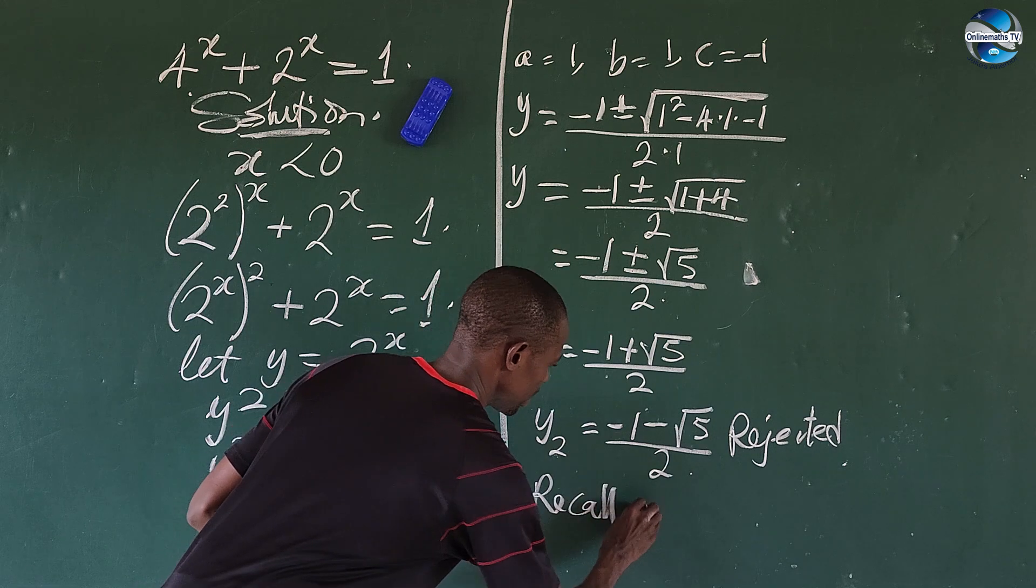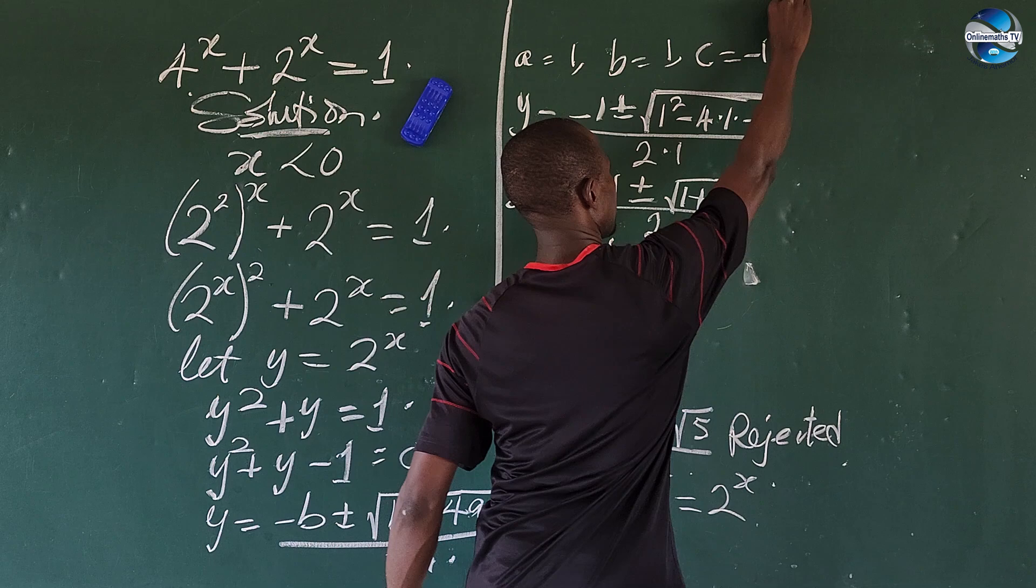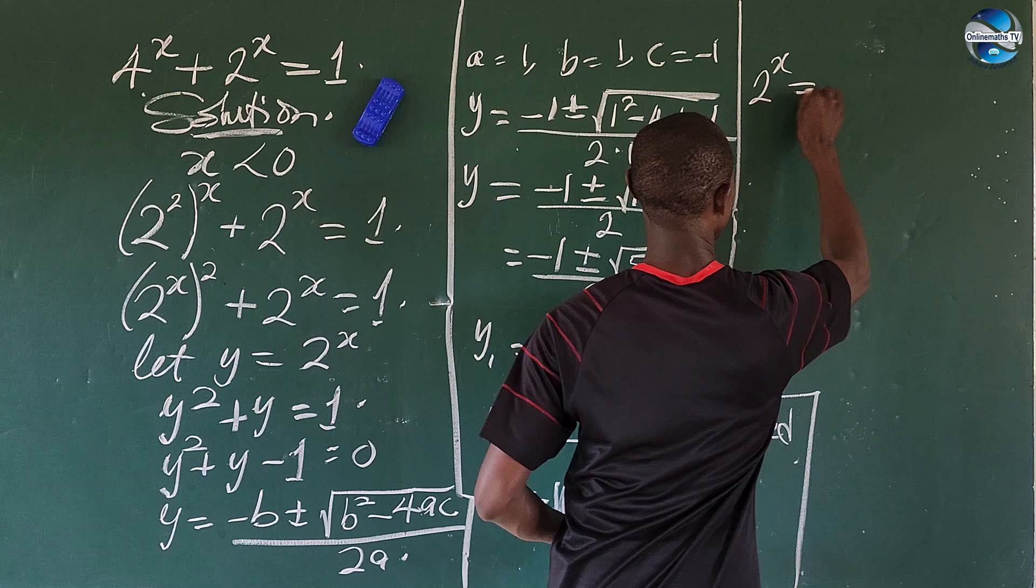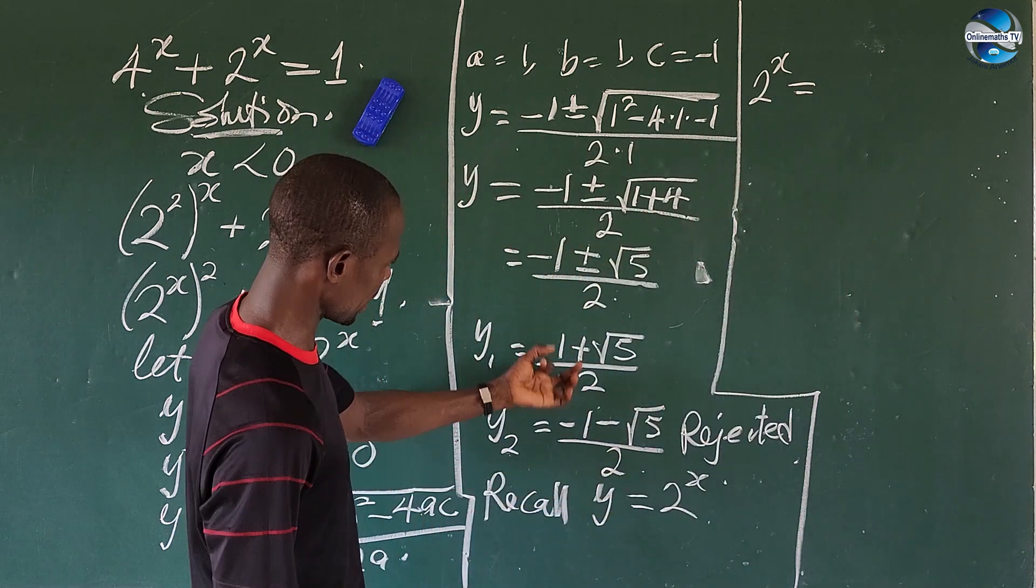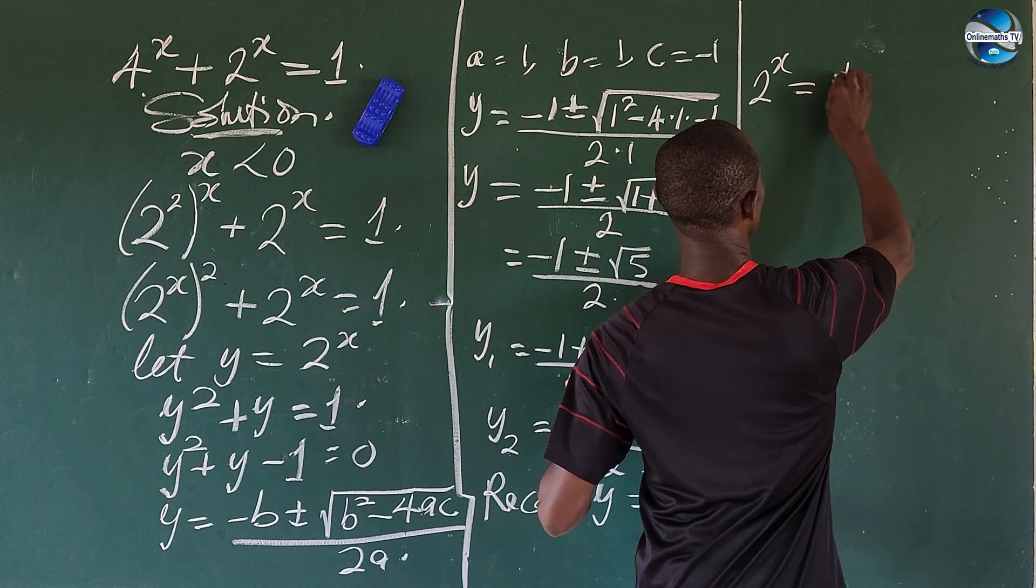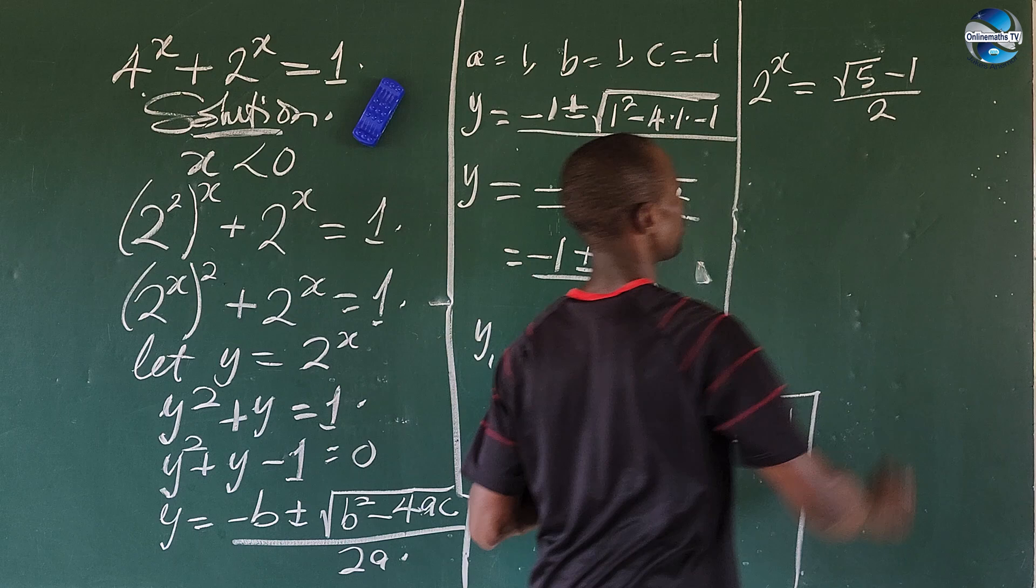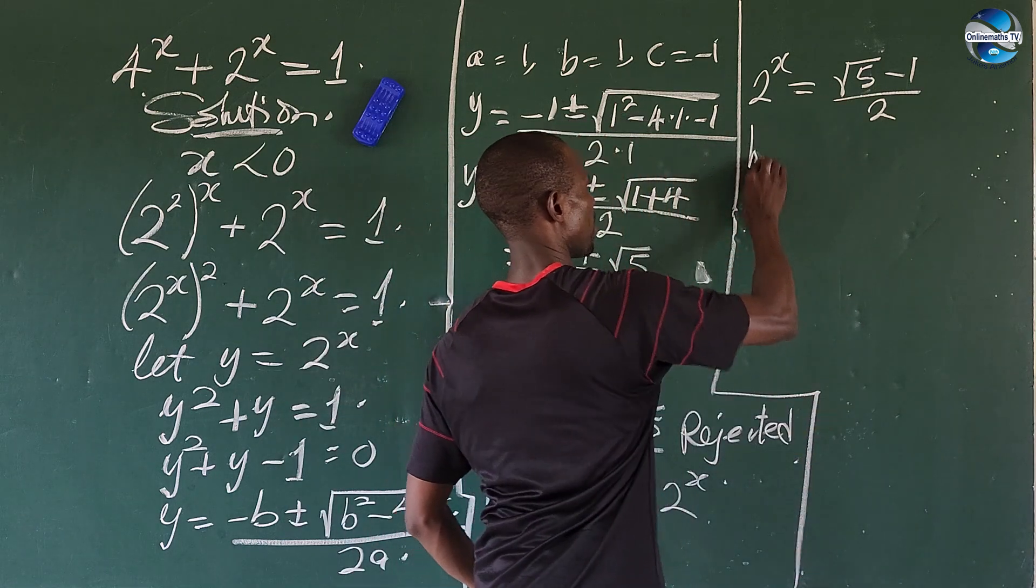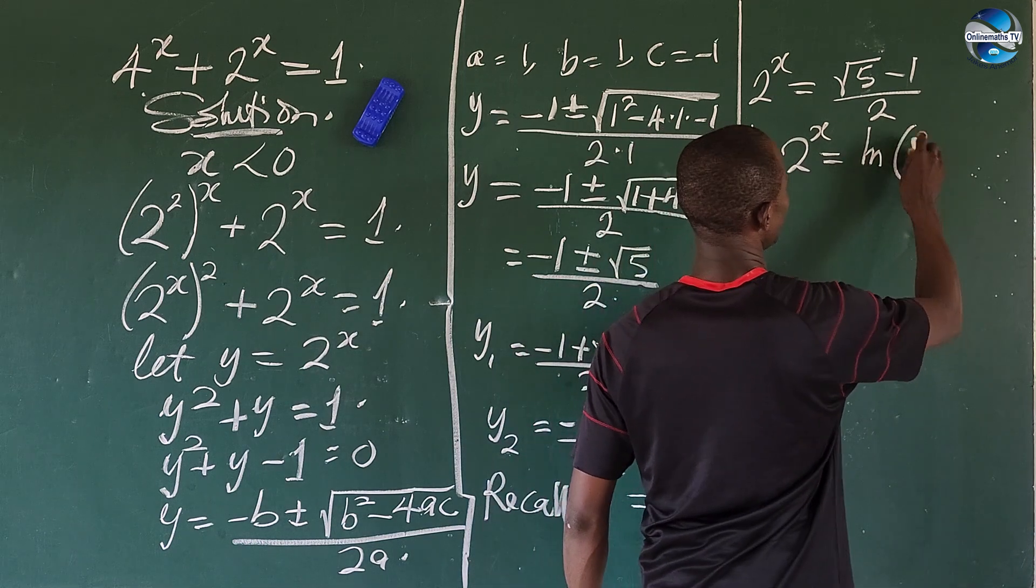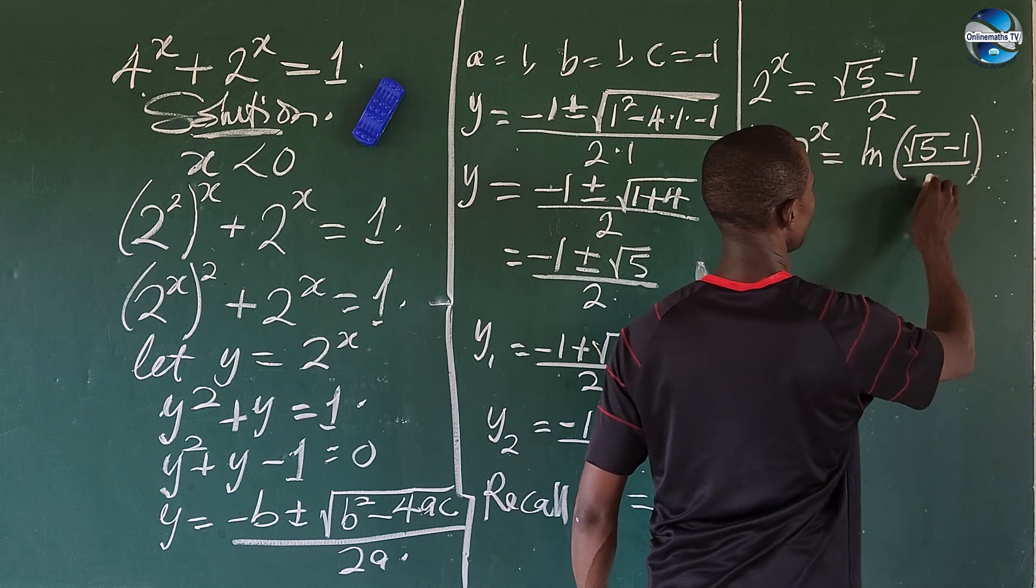Recall that we said let y be equal to 2 to the power of x. So from here we're going to have 2 to the power of x is equal to, like I said we're taking this here now, the square root of 5 minus 1 all over 2. So from here I'm going to ln both sides of the equation. So we have ln 2 to the power of x equal to ln bracket square root of 5 minus 1 close bracket all over 2.